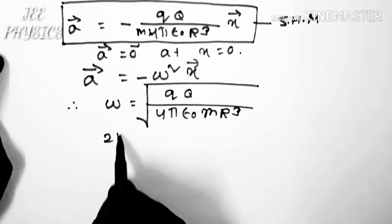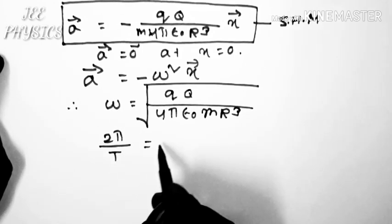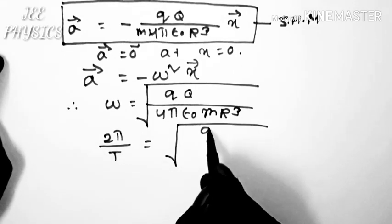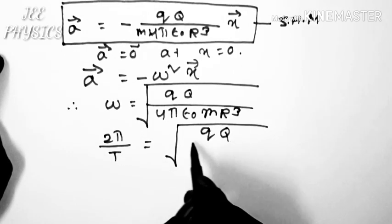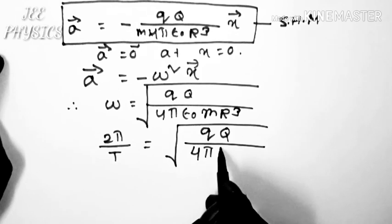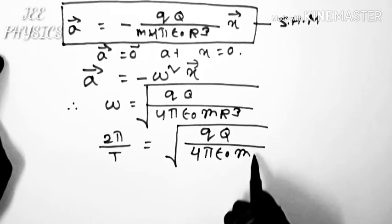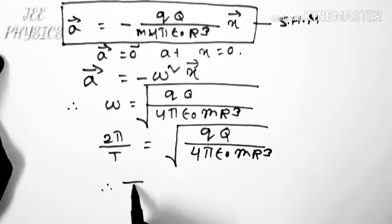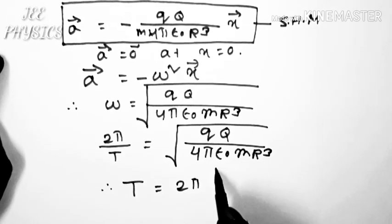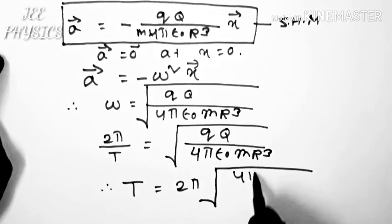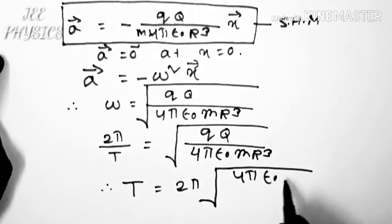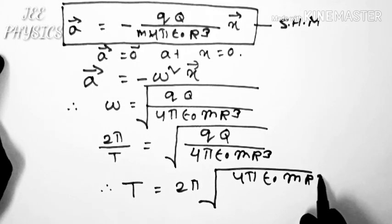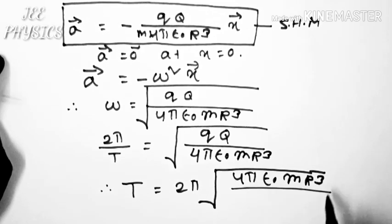Omega is equal to 2 pi by t, or t is equal to 2 pi by omega which equals 2 pi root over 4 pi epsilon naught m r cube by q q.